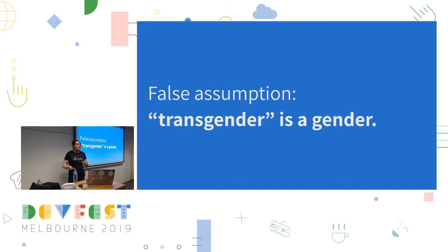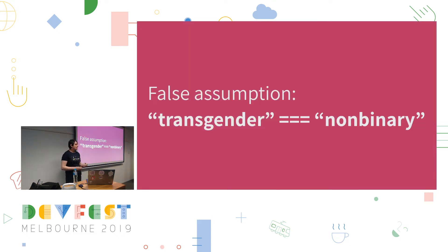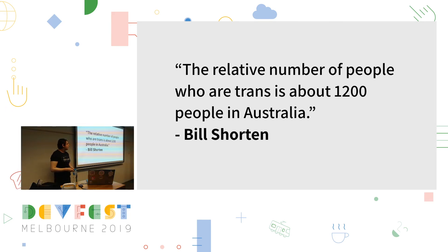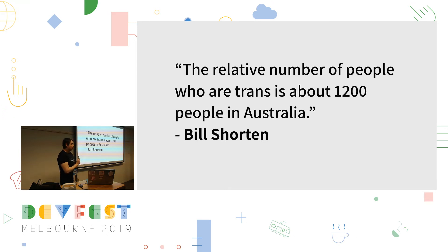That UI also made the assumption that transgender is the same as non-binary — and that's blatantly false. Most people who are transgender still identify as a man or a woman — they still identify within the gender binary. Being non-binary is a separate concept: it means you're not a man or a woman. And that conflation of being transgender with having a non-binary gender is all over the place. For example, this great quote from Bill Shorten, former opposition leader: 'If there's only 1,200 trans people in Australia, I've met most of them.' He got this number from the last census — but this number is actually the number of people who reported a non-binary gender identity on the census.